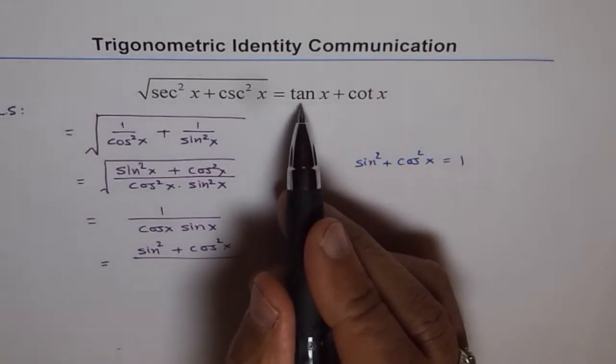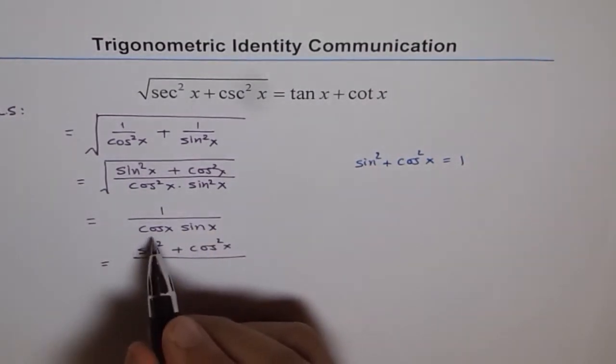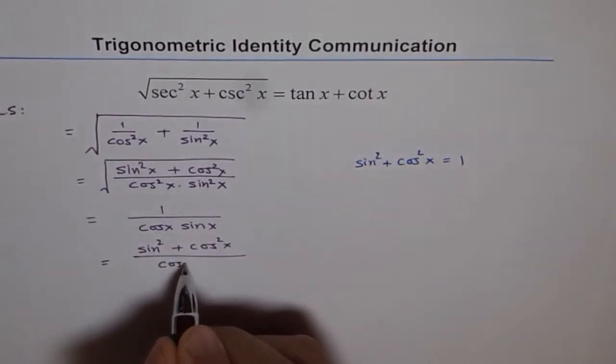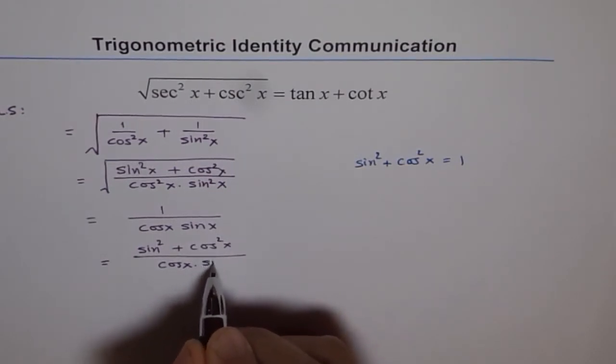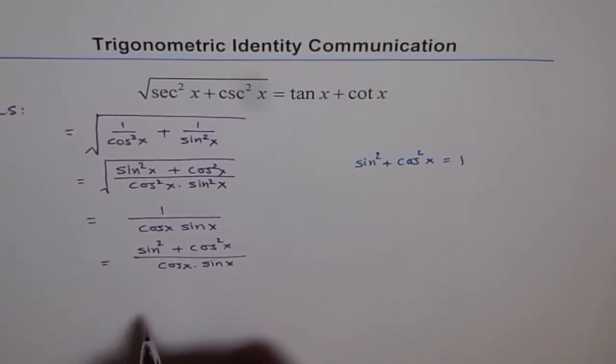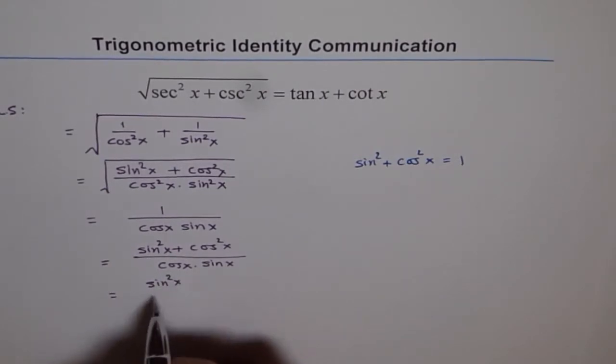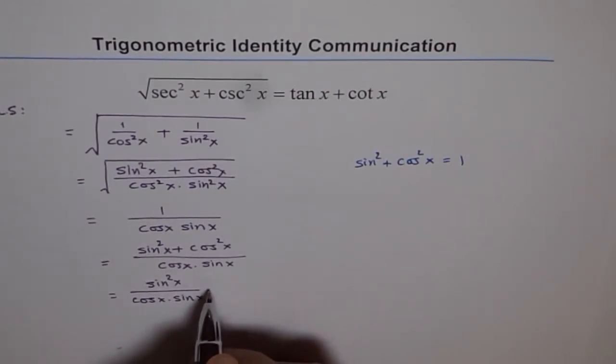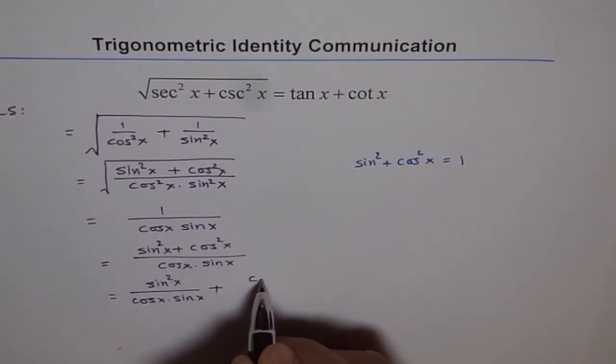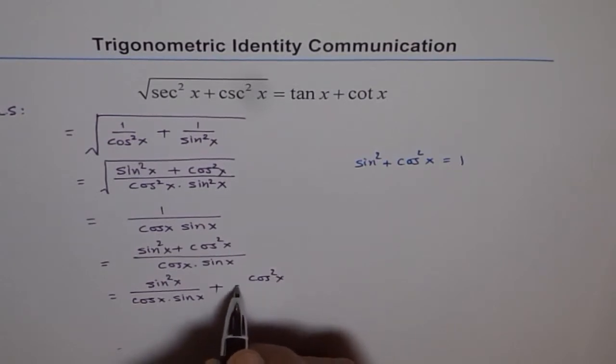Now I want tan first, so sine over cos, it makes sense. So let me write cos x times sine x. Now, this could be written as sin square x divided by cos x sine x plus cos square x divided by cos x sine x.